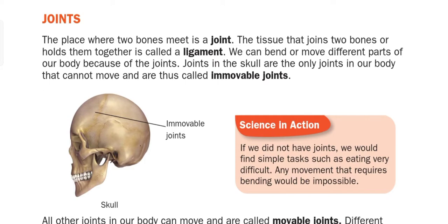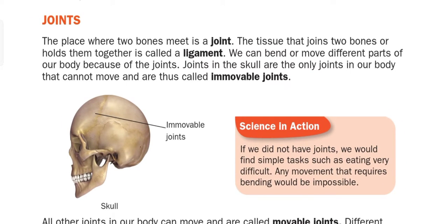Now let's discuss joints. What are joints? The place where two bones meet is called a joint. The tissue that joins two bones and holds them together is called a ligament — like a rope or tape connecting two things together. We can bend and move different parts of our body because of joints.